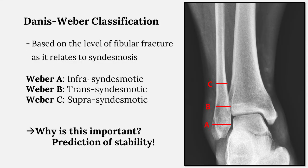The Dennis Weber classification is a commonly used ankle fracture system and is based on the level of the fracture of the fibula as it relates to the syndesmosis. Weber A fractures are below the syndesmosis. Weber B fractures are at the level of the syndesmosis. Weber C fractures are above the syndesmosis.